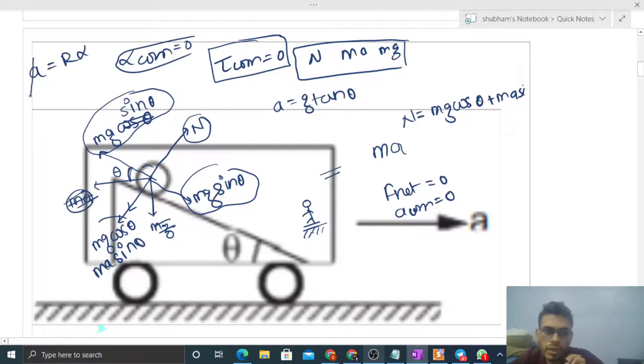Now check this equation: a equals r into alpha. So a is zero and alpha is also zero. It means this equation is satisfied. So v equals r omega—this equation is also satisfied. It means pure rolling occurs.